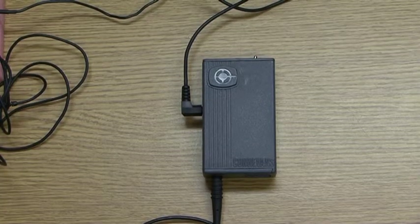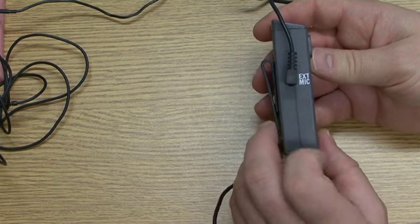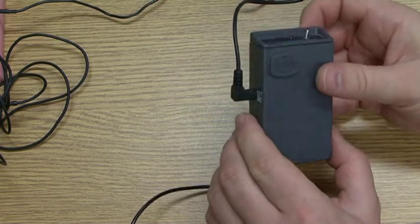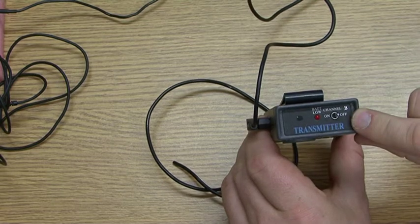Looking at the transmitter, on the side is the external microphone socket connected to the lapel microphone. Looking at the top of the transmitter, the channel letter needs to match the receiver, which is B in this case.